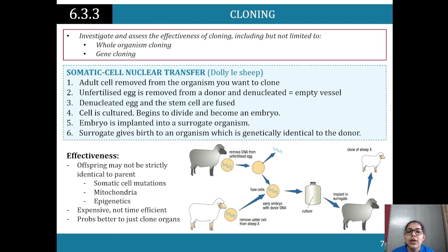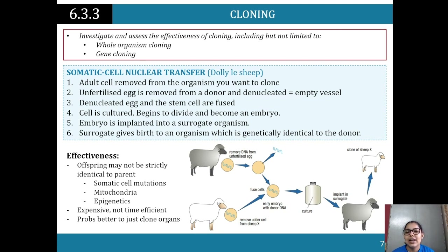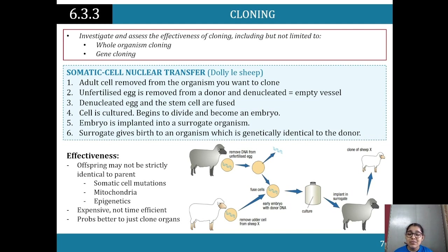Cloning via somatic cell nuclear transfer - Dolly the sheep is the classic example. An adult cell is removed from the organism you want to clone. An unfertilized egg is removed from the donor and denucleated, making it empty. The denucleated egg and the stem cell are fused, cultured, and begin to divide to become an embryo. The embryo is implanted into a surrogate, which gives birth to an organism genetically identical to the donor. However, offspring may not be strictly identical due to somatic cell mutations, mitochondria, and epigenetics. The process is expensive and not time-efficient.